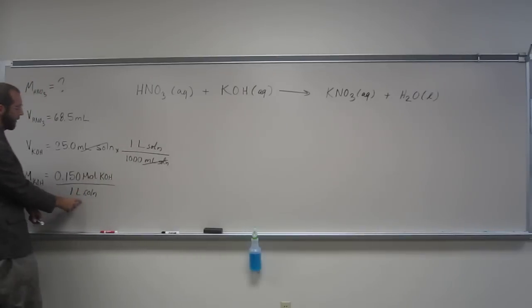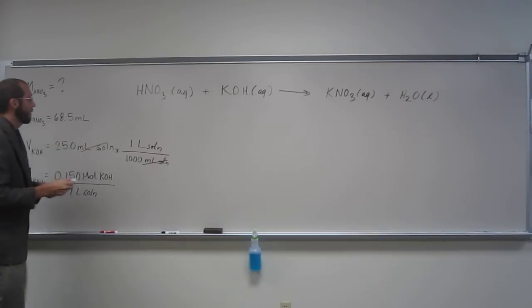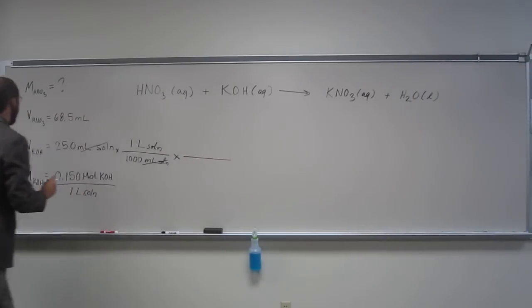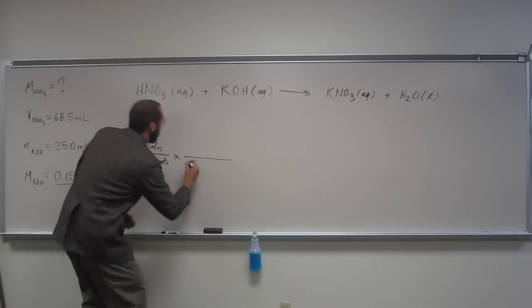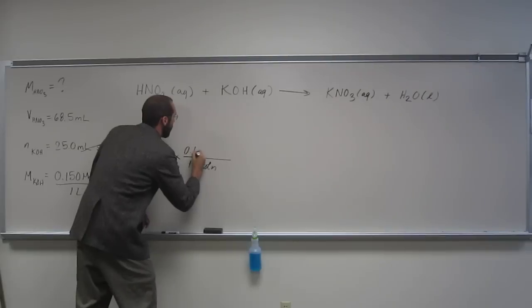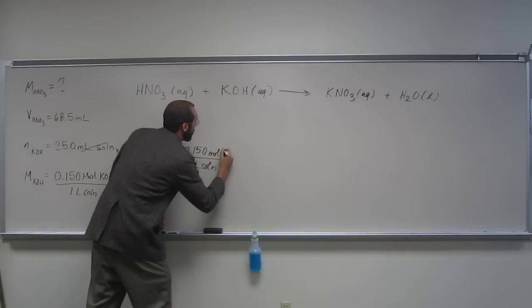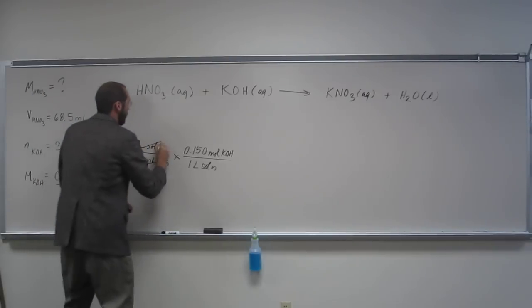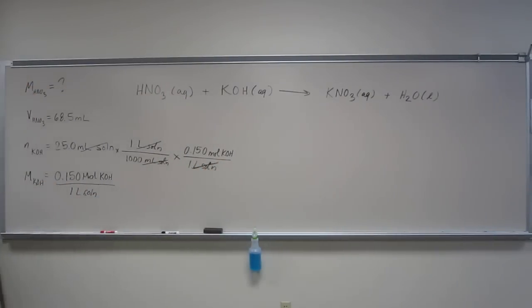And then now we can use this one here, right, to figure out how many moles. So remember, molarity, so now we're not figuring out volume anymore, we're figuring out the number of moles of KOH. Is everybody okay with that? So we'll use this molarity, say one liter of solution is 0.150 moles of KOH.